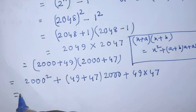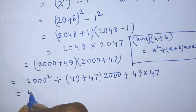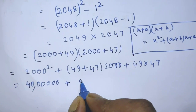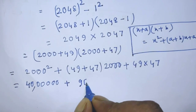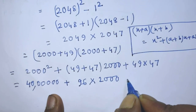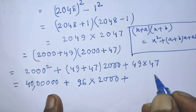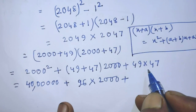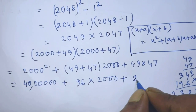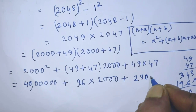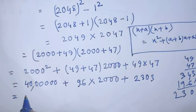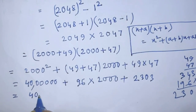So 2000 squared is 40 lakhs. Then we have 96 times 2000, which is 1 lakh 92 thousand. And 49 times 47 equals 2303. Adding these together gives us the final answer.